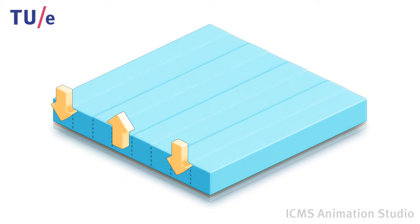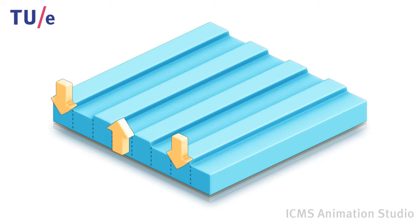This results in an expansion of the helical areas and a shrinkage of the perpendicular areas. By alternating switching the light on and off, protrusions come up and disappear on the surface.